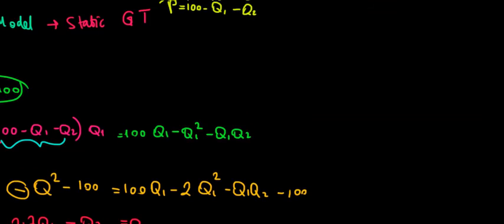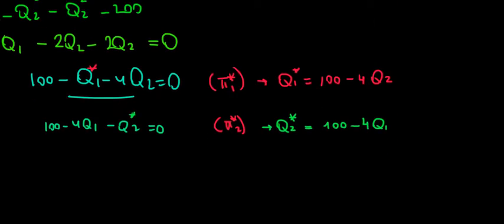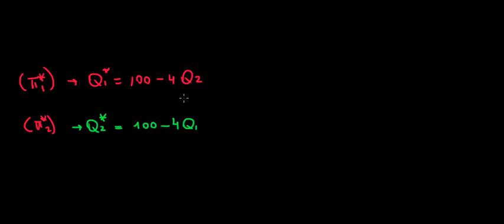One thing to keep in mind is that these conditions depend on each other. The first firm takes into account the optimal quantity of the second, and vice versa — they decide at the same time. This is a simultaneous game in game theory. Because of that, we can substitute one equation into the other. There is a shortcut: since these are symmetrical conditions, the quantities will also be equal. But I want to show the long way so you can see how the math works out.